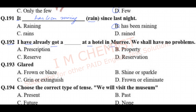Question number 192: 'I have already got a reservation at a hotel in Murray, we shall have no problems.' We have to choose the correct word. The right answer is option D — 'reservation'.